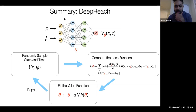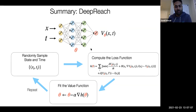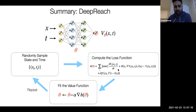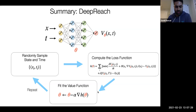That's really the summary behind DeepReach: it represents the value function as a neural network taking state and time as input, uses sinusoidal activation functions at each layer, and outputs the value function at that state and time. To learn the parameters, we randomly sample state and time at each training iteration, and minimize a loss function that is the PDE plus terminal condition for the backward reachable set, or the variational inequality plus terminal condition for the backward reachable tube. We minimize that loss to move parameters towards lower loss, and repeat.